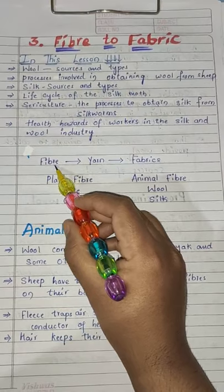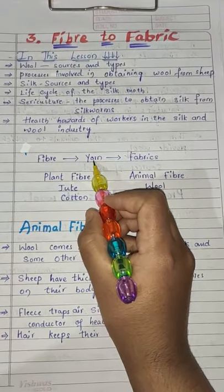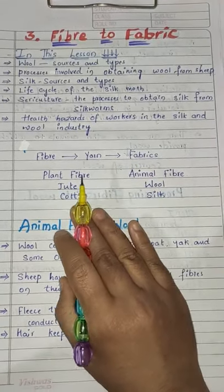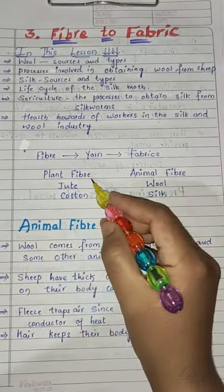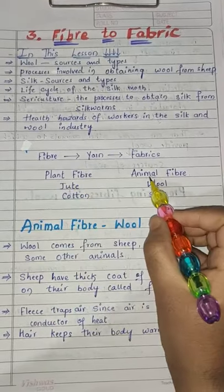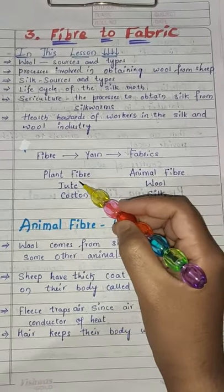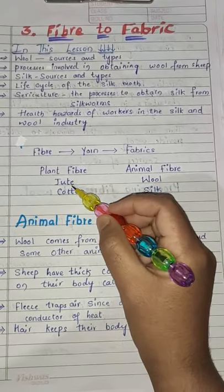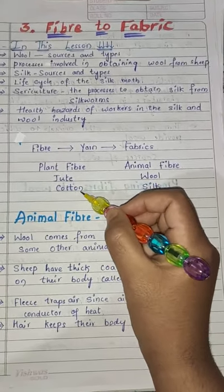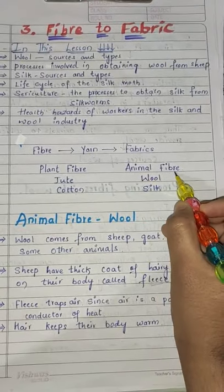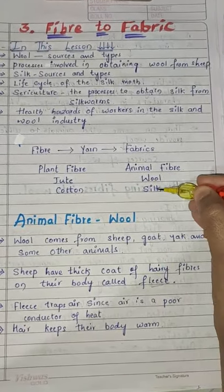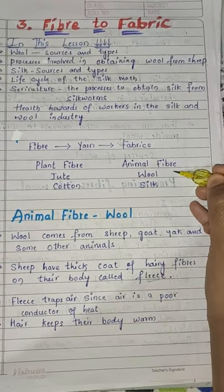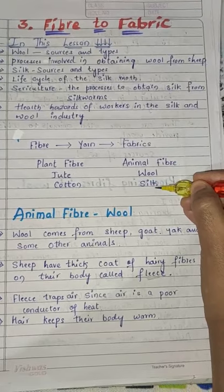Fibers are used to make yarns, which in turn are used to make fabrics. In earlier classes, you have learnt about fibers obtained from plants and from animals. The fibers which are obtained from plants are called plant fibers, such as jute and cotton. The fibers which are obtained from animals are called animal fibers — for example, wool and silk.